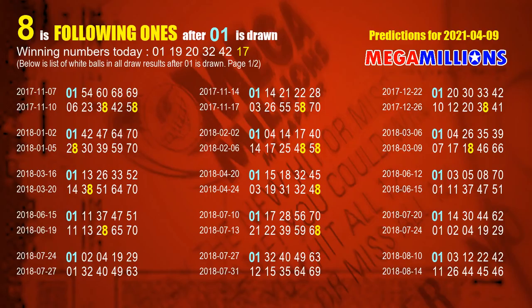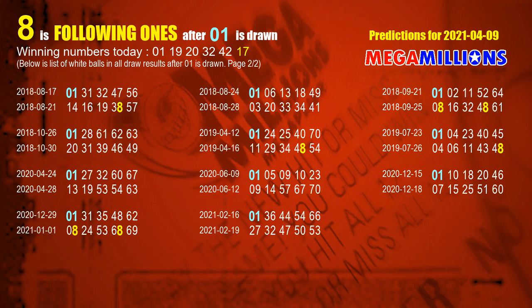First, let's find out the following ones through today's result. Following numbers refer to those numbers picked on the next draw after this one, and following ones are the units digits of those following numbers. The first white ball is 01. We list all draw results which are after a draw with 01 as a white ball winning number. The most frequently following units digit is 8 when 01 is the winning number in the last draw — we've highlighted units digit 8 in yellow.